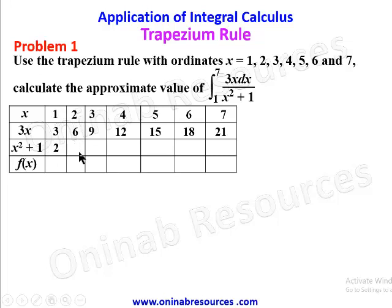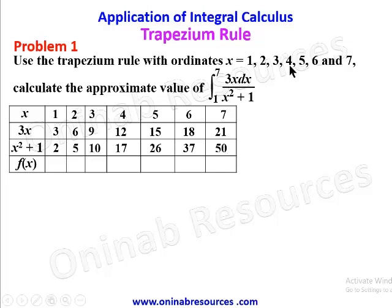Continuing the x²+1 column: 4+1=5, 9+1=10, 16+1=17, 25+1=26, 36+1=37, and 49+1=50. Now we divide the numerator by the denominator for each value.